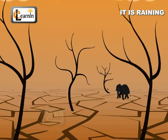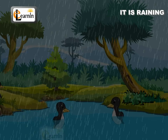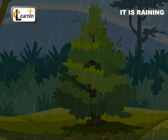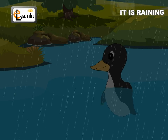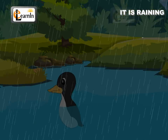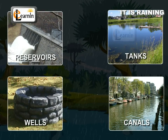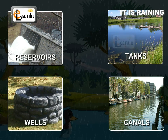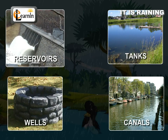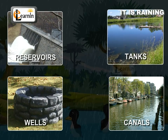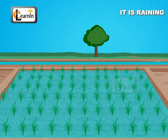When it rains, every organism enjoys it. Plants show this by becoming greener and animals show it by being more energized and well-behaved, as everyone is in good health. We humans require water for multiple tasks. We have learned to store water by various means like reservoirs, tanks, wells, canals, etc.